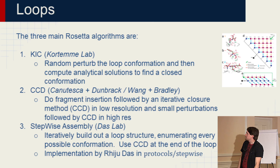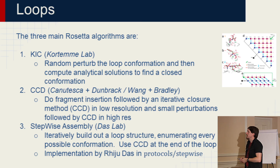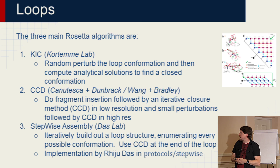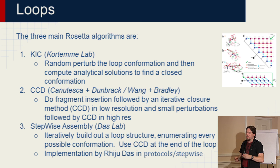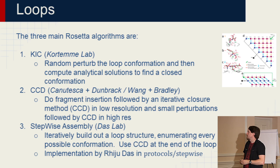The three main algorithms are the following. We have KIC, which to me is like magic because the math is well beyond what I can comprehend, but it essentially does random perturbations of loop conformation and computes an analytical solution to find a closed conformation. CCD is usually performed by doing a fragment insertion — not really by cutting and pasting a fragment, but by copying the phi and psi dihedral angle values from a fragment into the loop in the pose.